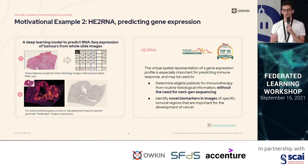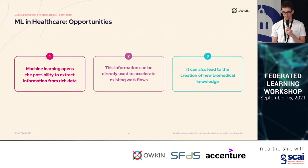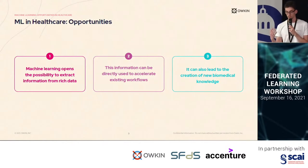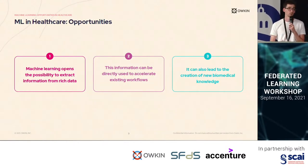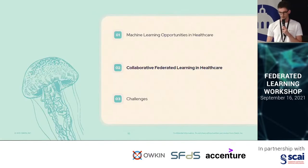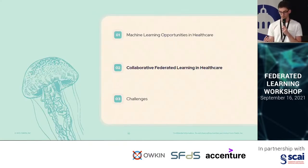So these are examples of applications of machine learning in healthcare. Machine learning opens the possibility to extract information from rich data, in particular from imaging modalities. This information can be used to accelerate existing workflows — for instance by removing the need to undergo next-gen sequencing — but also it can lead to the creation of new biomedical knowledge.